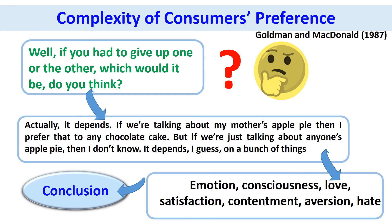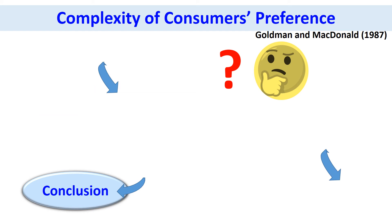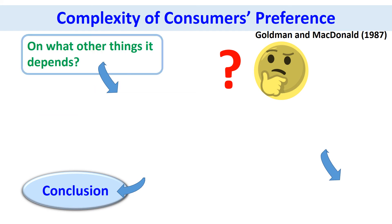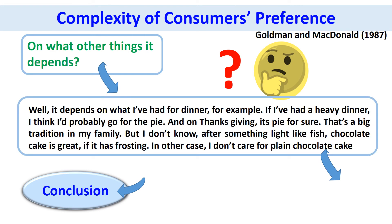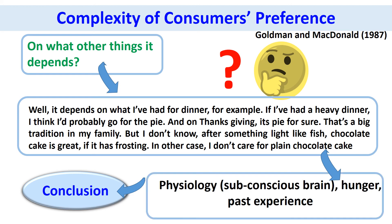Therefore there are many emotional factors such as consciousness, love, satisfaction, contentment, aversion, and hate. If asked what else it depends on, the answer might be: 'It depends on what I have had for dinner. If I've had a heavy dinner, I would probably go for the pie. On Thanksgiving it is pie for sure — that's a big tradition in my family. But after something light like fish, chocolate cake is great if it has frosting. Otherwise I don't care for plain chocolate cake.' Therefore physiology, hunger, and past experience could also play a role.